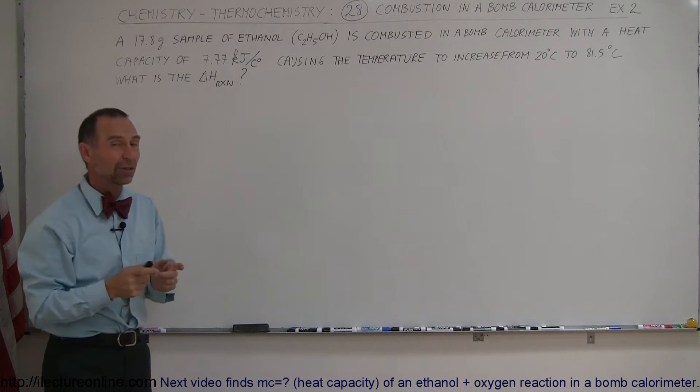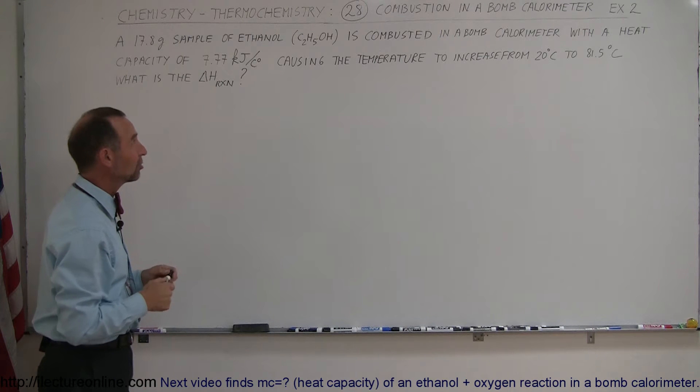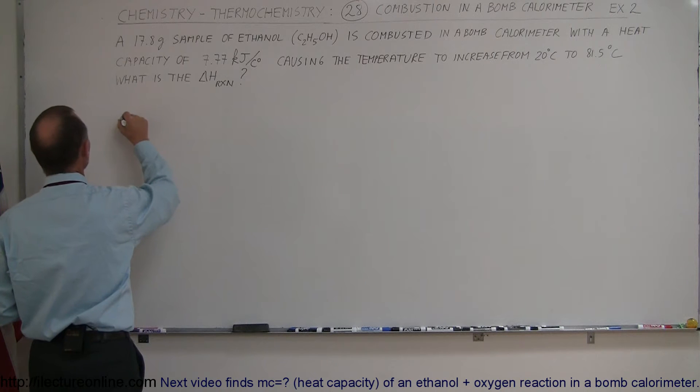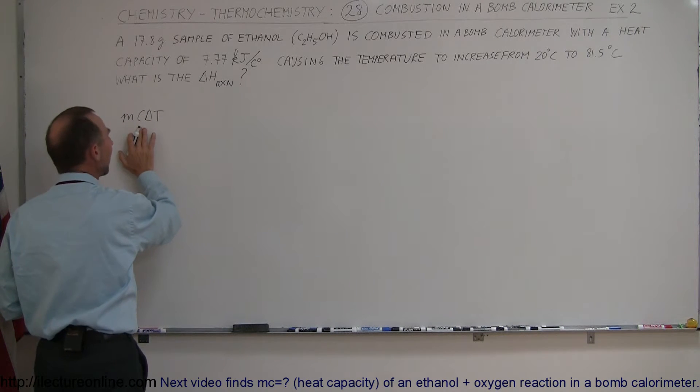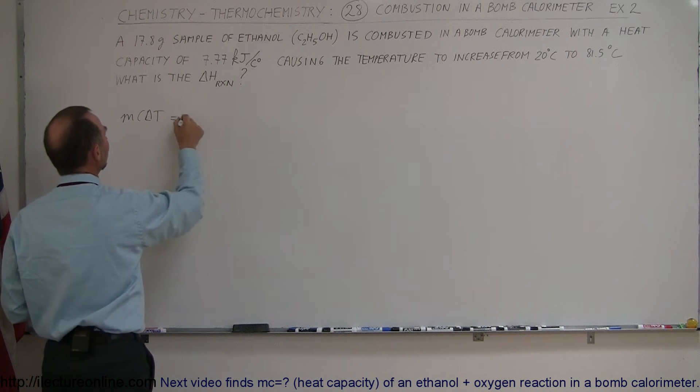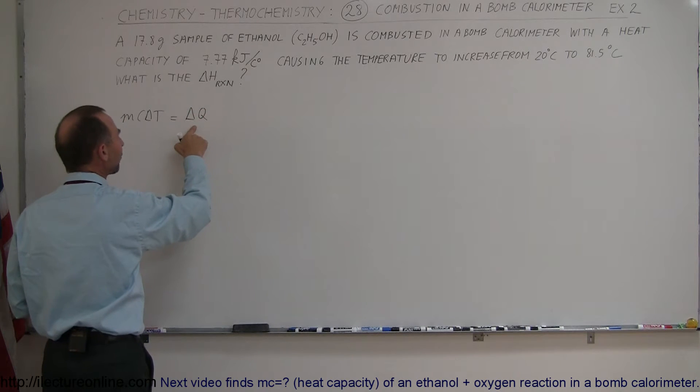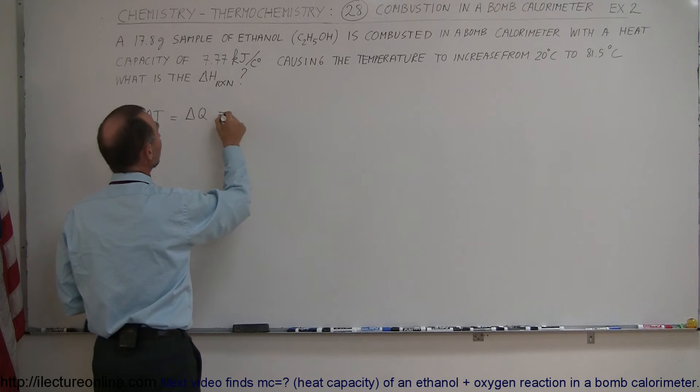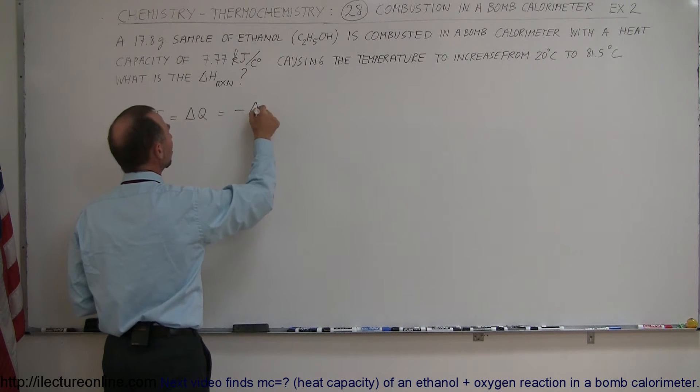From this information, we should be able to figure out the enthalpy change of that reaction. Remember that what we're doing here is we say that the MC delta T, the heat gained by the calorimeter, is equal to the heat given off by the reaction. To calculate the heat given off by the reaction, this is equal to minus the enthalpy change.